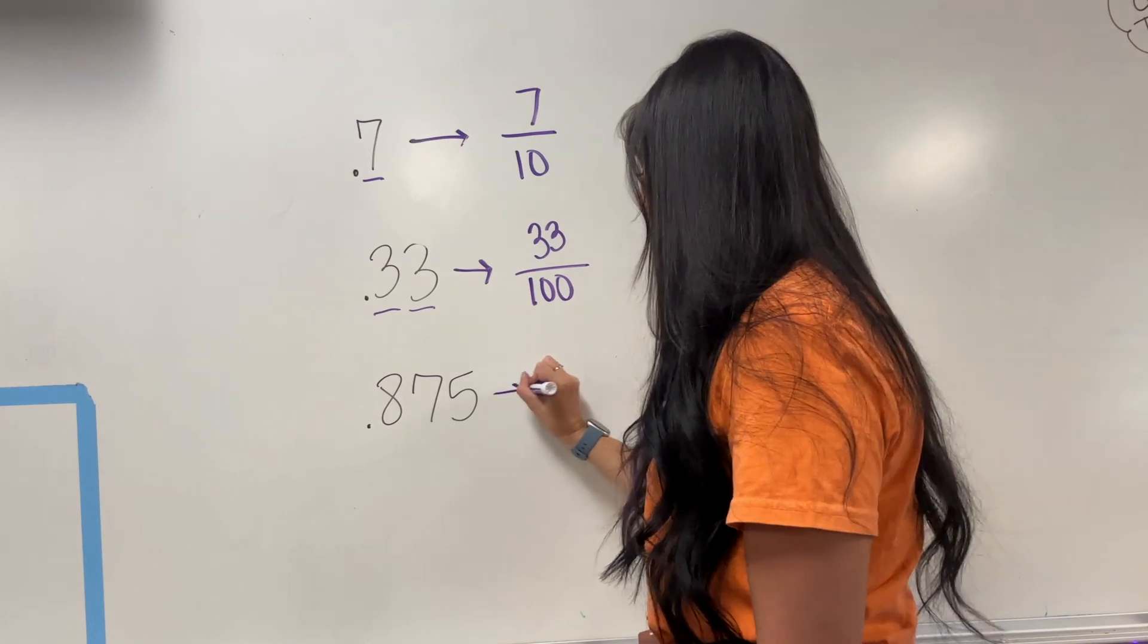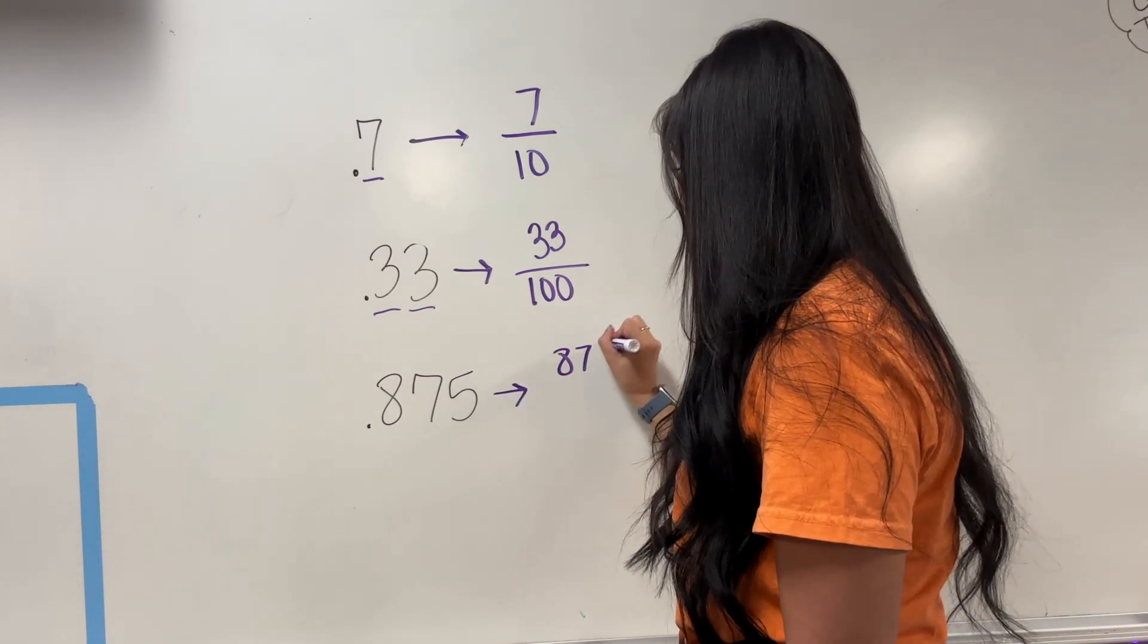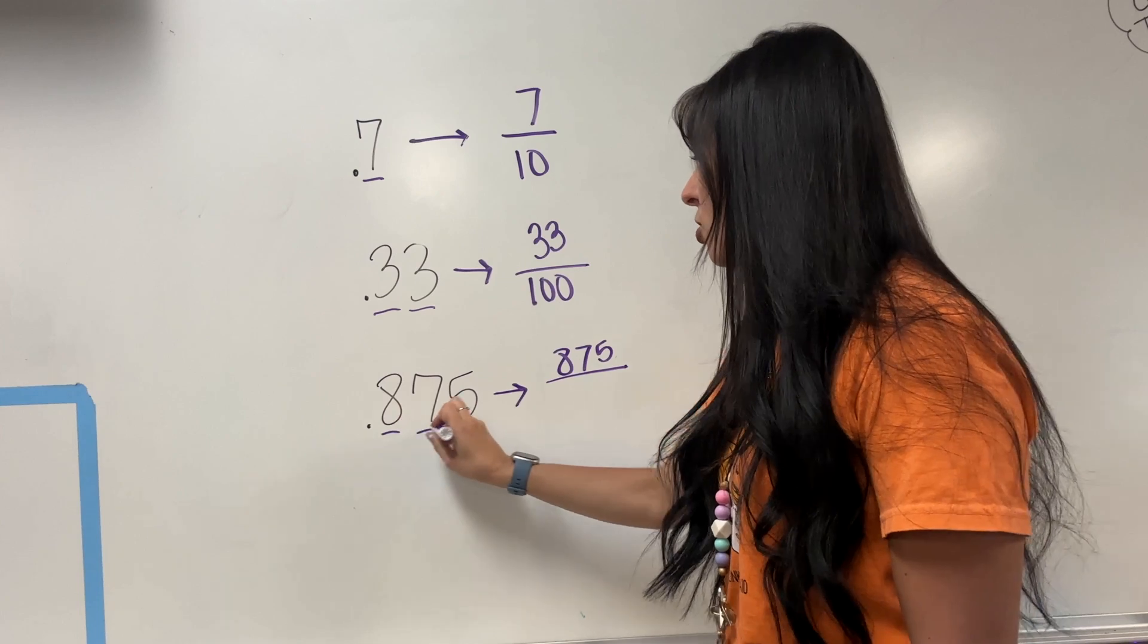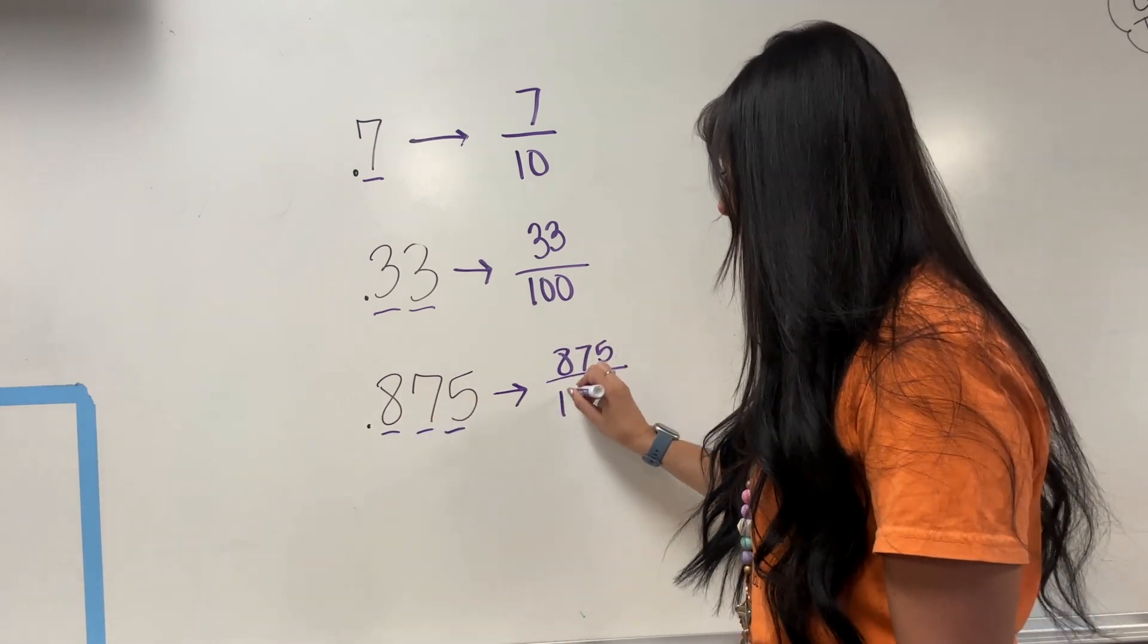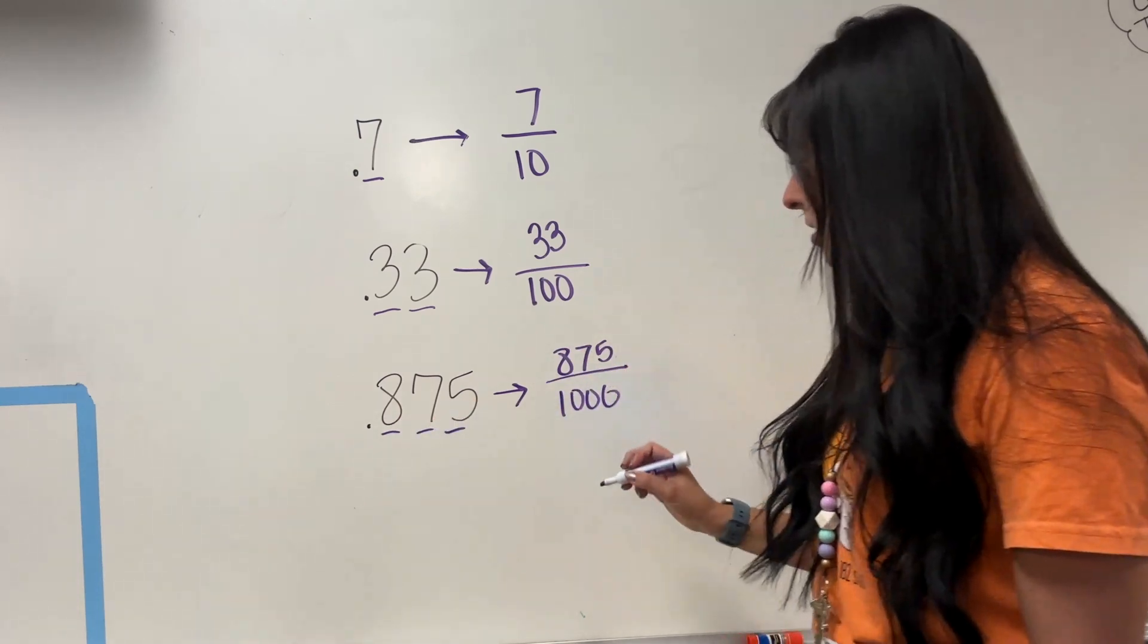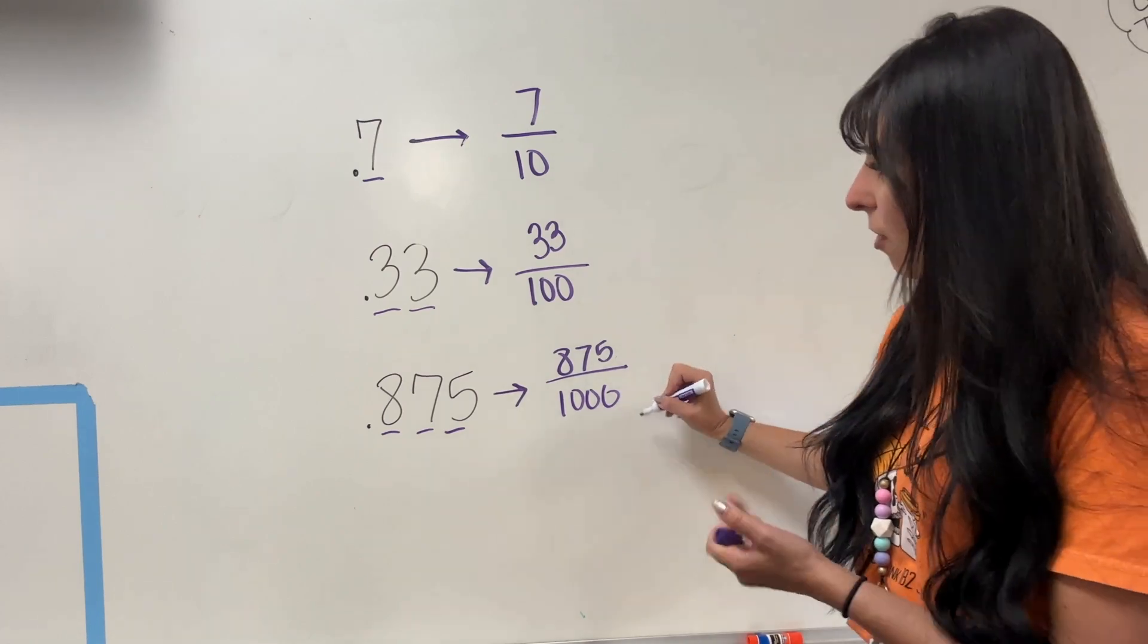Down here, I'm going to add that number as my numerator without the decimal. There's 1, 2, 3 numbers, meaning I need three zeros. So we have 875 over 1,000.